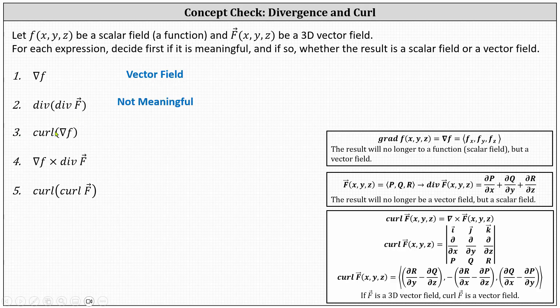Number three, we begin with the gradient of f, or del f, which results in a vector field, and then we determine the curl of that vector field, and the curl of the vector field is another vector field. The result is meaningful, and the result is a vector field.